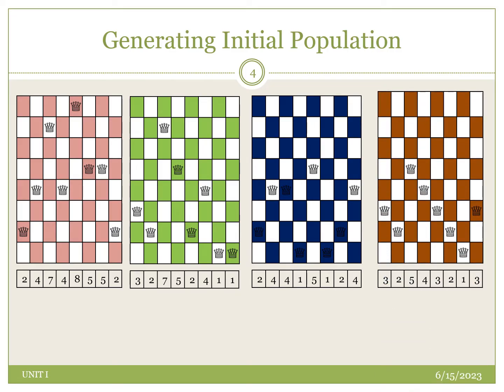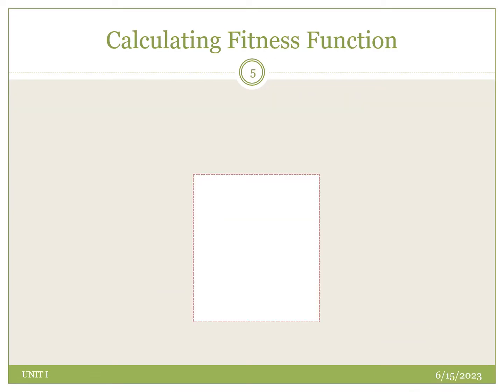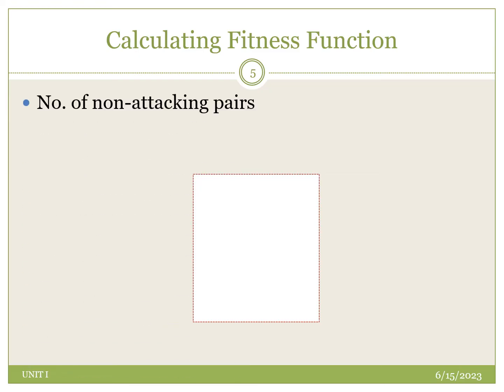After generating the initial population randomly, we have to evaluate the fitness function. For calculating the fitness function, we use the approach of finding the non-attacking pairs — that is, for each queen, we are finding how many other queens are in non-attacking positions.